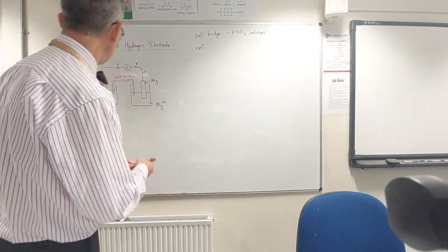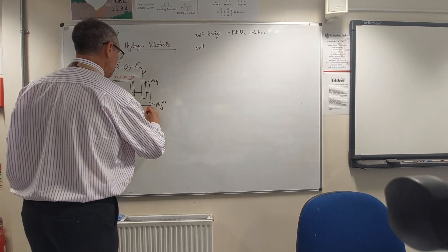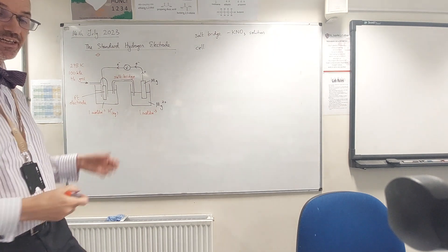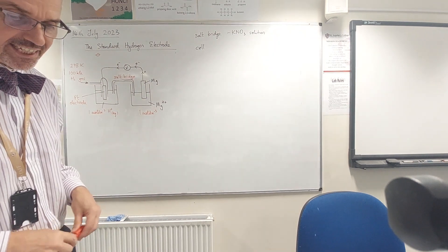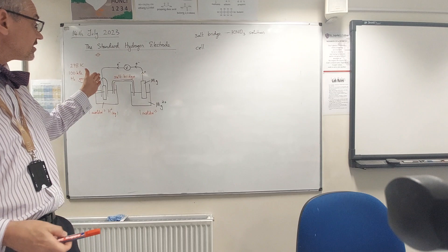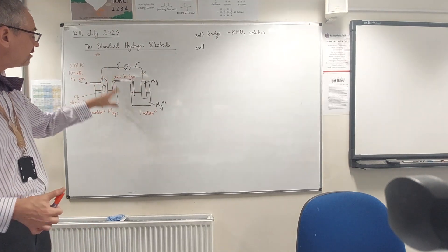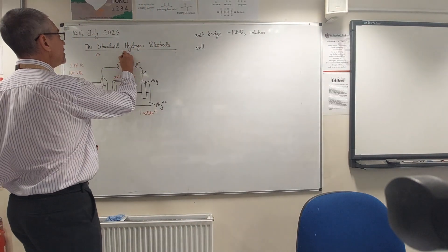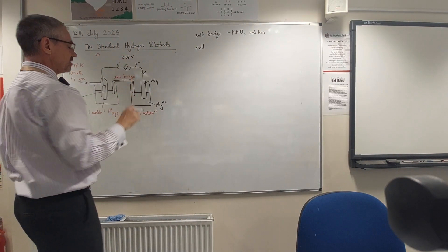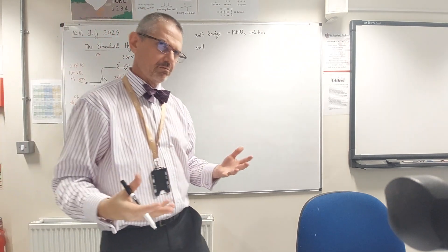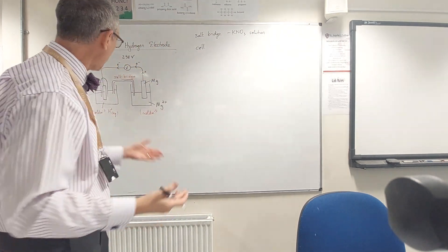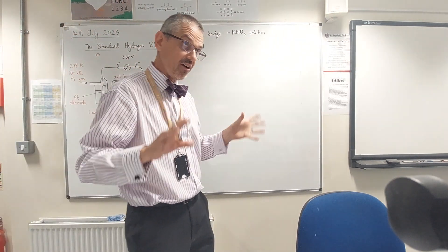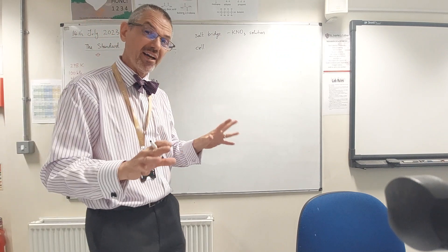Over here I would need it to be one mole per dm cubed magnesium 2+ solution as well, so that we're getting a standard reading. So I could do all of this and I would get a voltage reading - the voltage reading would be 2.38 volts. So you might ask the question again, well how do we know how much of that is from the magnesium and how much is from the hydrogen?